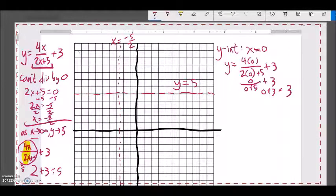So when x is 0, y is 3. So it goes to the point 0, 3. So there's my y intercept, 1, 2, 3, just through that point.